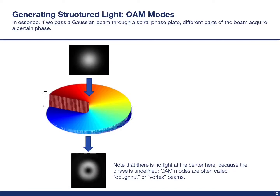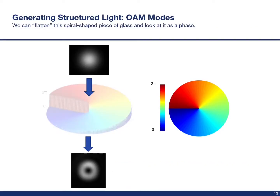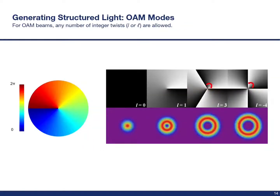So how does this work? Let's consider a conventional way to generate an OAM mode. If we shine a Gaussian beam through a so-called spiral phase plate, we get an OAM beam. Since the speed of light is different in glass compared to air, parts of the beam which travel different distances through different thicknesses of glass will acquire a certain phase shift compared to other parts of the beam. The phase at the center is undefined here, and so we don't find any light there either. Instead of a 3D piece of glass, we can visualize the spatial phase shift directly, where the color represents phase. OAM beams are defined by the azimuthal index L. These can have any number of integer twists, with grayscale phases and associated intensity patterns shown.